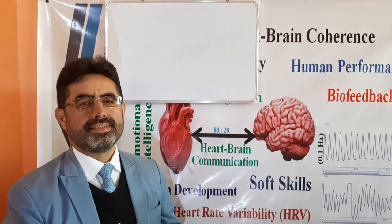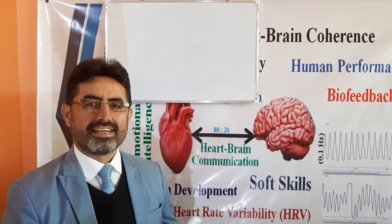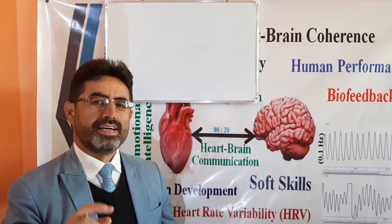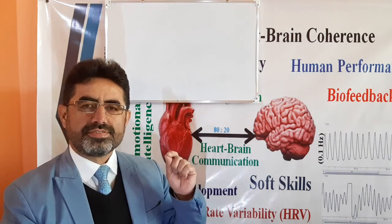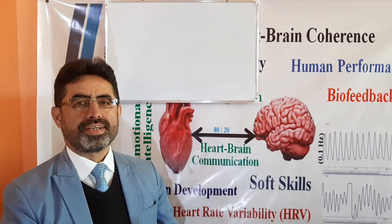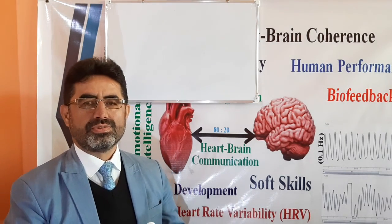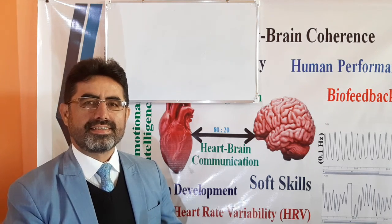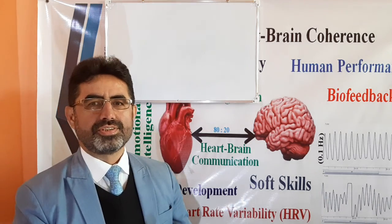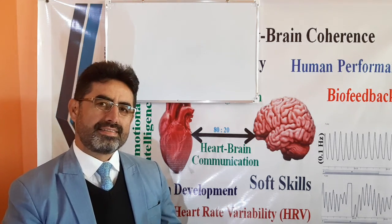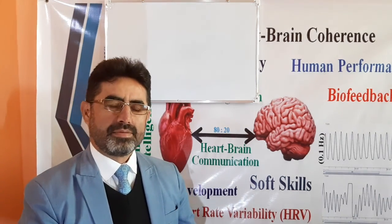It's important to know that our heart and brain interact with one another through four main channels: neurological channels, which the heart and brain use through the transmission of nerve impulses; biochemical channels, which enable interaction through hormones and neurotransmitters; an energetic channel using electromagnetic waves and energy; and physiological channels using pulse waves or pressure waves, mostly produced by the heart.